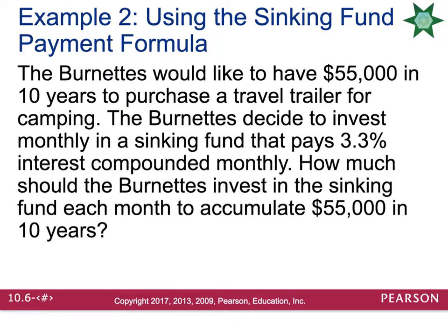The Burnettes would like to have $55,000 in 10 years to purchase a travel trailer for camping. They decide to invest monthly in a sinking fund that pays 3.3% interest compounded monthly. How much should the Burnettes invest each month to accumulate $55,000 in 10 years?